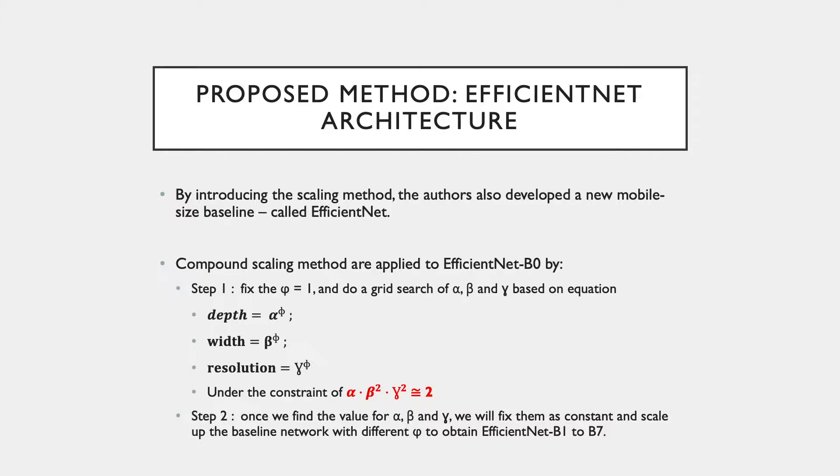The first step is to fix phi at 1 and then do a small grid search of alpha, beta, and gamma. Particularly, they find the best value for the model under the constraint that is very close to 2. Then, after they find the value for alpha, beta, and gamma, they fix these as constants and scale up the baseline network with different phi to obtain EfficientNet-B1 to B7. In this way, it uses the most minimal cost to search for the hyperparameter of a large model, and at the same time, it has better performance overall. It actually cuts down the complexity of finding the best hyperparameter.